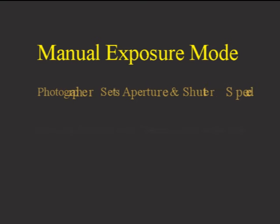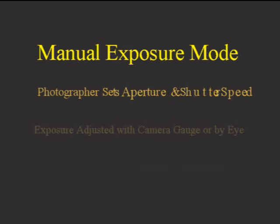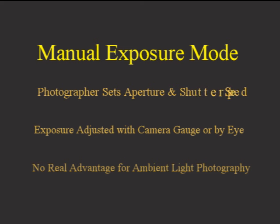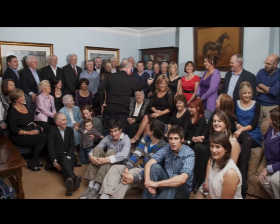Apertures may no longer be as wide or as small as the scene requires, or shutter speeds become too slow to freeze the action. I do use manual exposure mode, but often for indoor use when I've predetermined the aperture I want and I'm adjusting the lighting — as you can see in this image of a very large family group, where I'm taking a flash meter reading before setting the exposure manually.